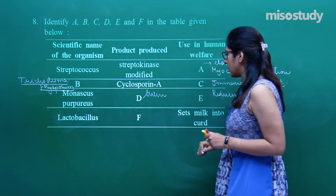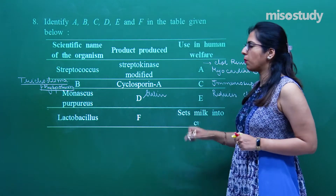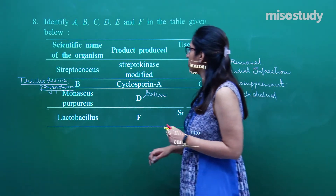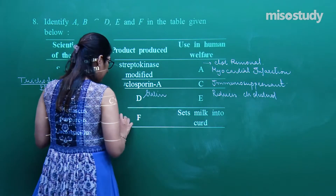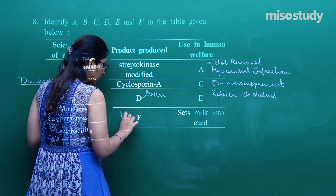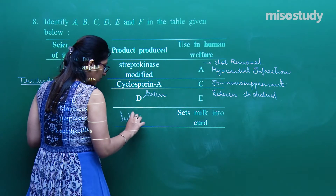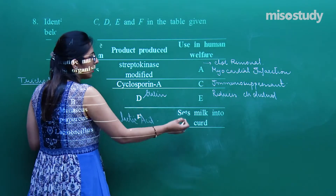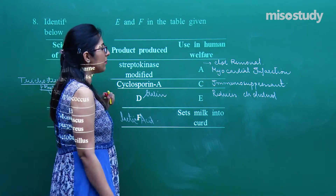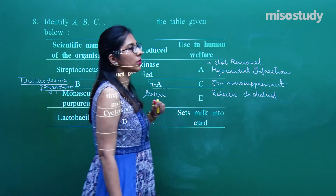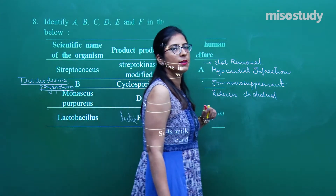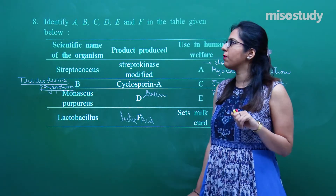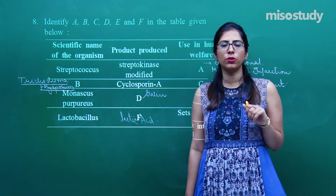Lactobacillus — the product it produces is lactic acid, and why it is important is it sets milk into curd. Again this was another very easy question, directly from your notes.